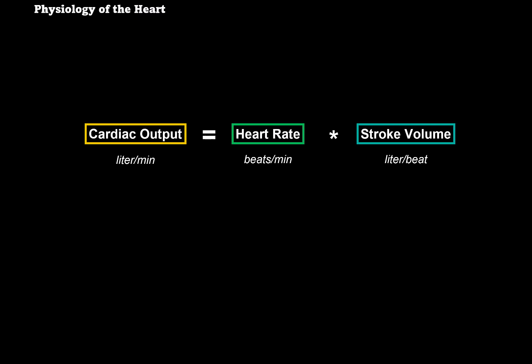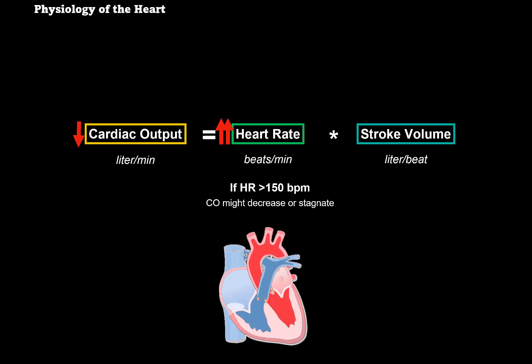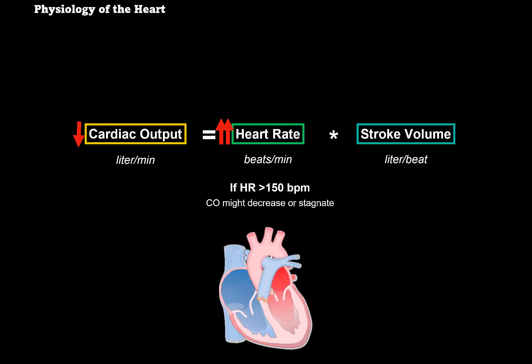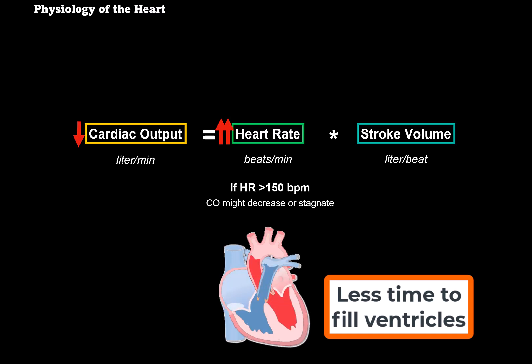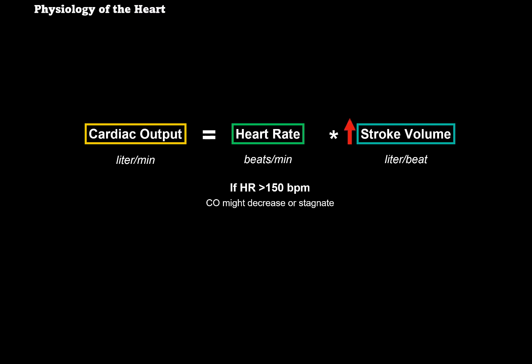What are the factors that determine cardiac output? If we increase the heart rate, cardiac output increases. But if the heart rate rises to 150 beats per minute, there's a paradoxical effect: the cardiac cycle becomes so short that the ventricles won't be able to fill with blood properly, so cardiac output may decrease or stagnate. If the stroke volume increases — the actual blood ejected during each contraction — then naturally the cardiac output will increase as well.